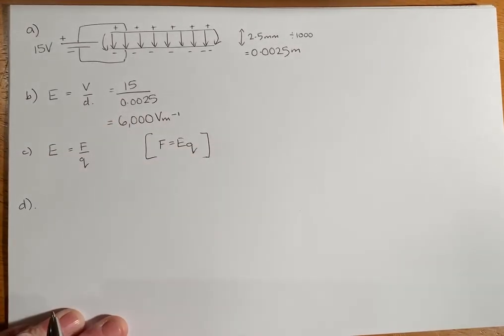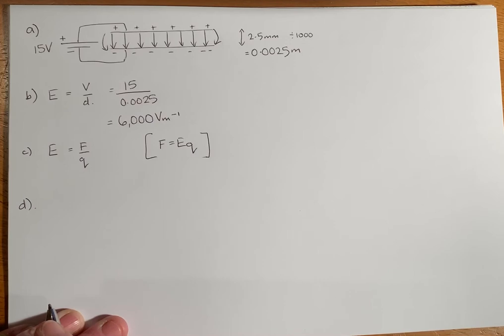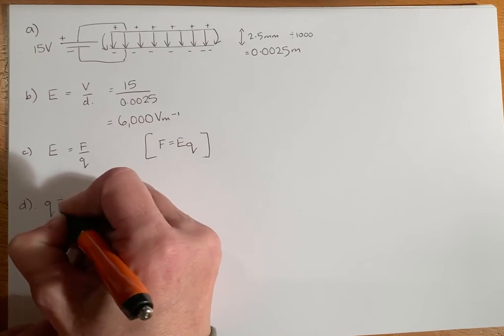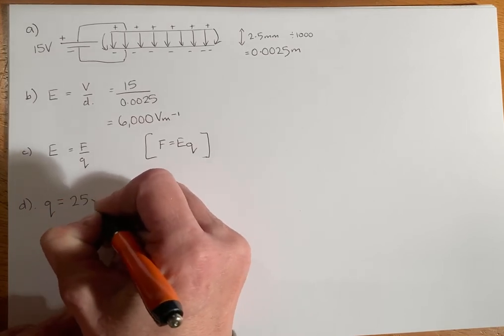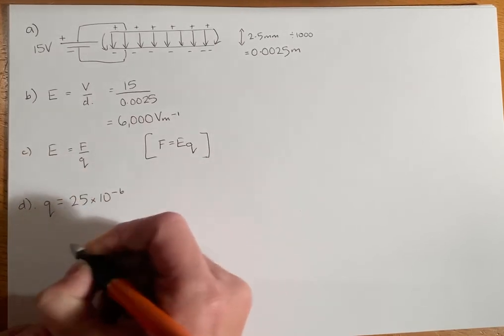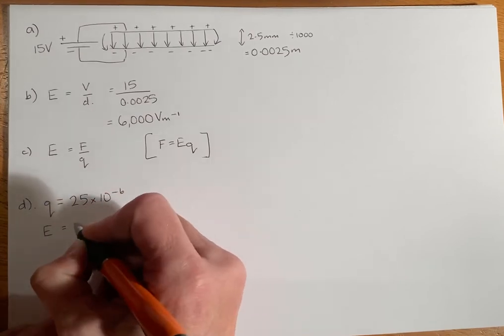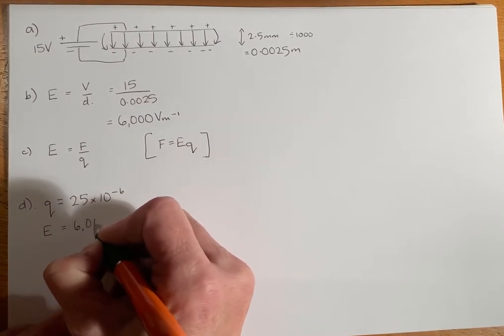And part D says a 25 times 10 to the minus 6 Coulomb charge is placed inside the field. Calculate the electric force on the charge. So this time our charge is 25 times 10 to the minus 6. We already know our electric field strength - we've worked that out in B.